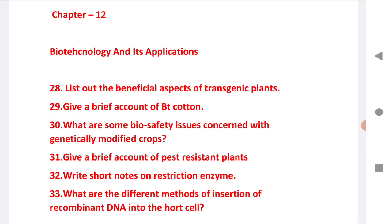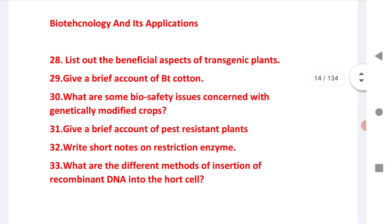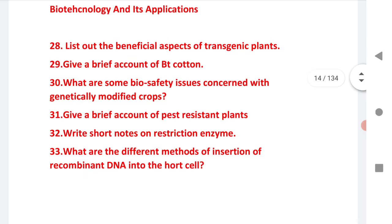The last chapter is chapter 12, Biotechnology and Its Applications. SAQs include: list out the beneficial aspects of transgenic plants; give a brief account of BT cotton; what are some biosafety issues concerned with genetically modified crops; write a short note on restriction enzymes; and what are the different methods of insertion of recombinant DNA into the host cell.